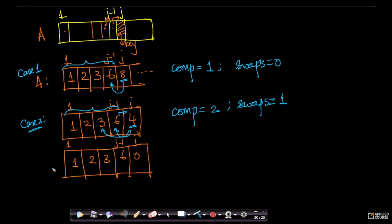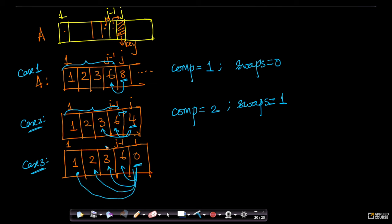Now let's take an extreme case. Assume this key is smaller than 6, smaller than 3, smaller than 2, and smaller than 1 — all elements would get moved to the right. How many comparisons have I done? Four comparisons. How many swaps have I done? Four swaps.